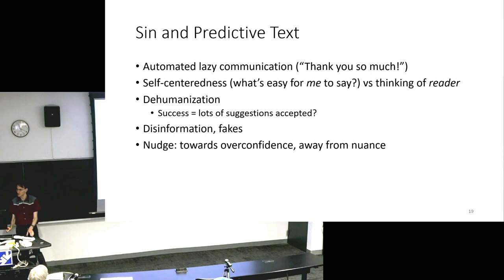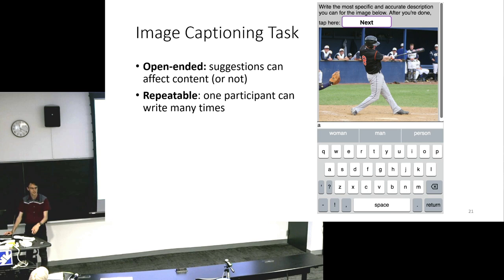So sin and predictive text. This is some things that I've studied in my dissertation work. I looked at how the smartphone keyboards that we all use affect what we write. So we get lazy communication, like a single tap is we can insert thank you so much, which is a keystroke, a single tap, focusing on self-centeredness. What's easy for me to say instead of thinking about the reader. Overall, we get this idea of cognitive interference. So here's a study that I did. I had people do an image captioning task. I gave them 12 different images, asked them to write a caption on it.